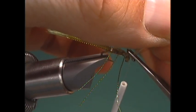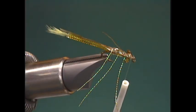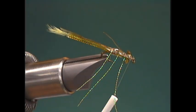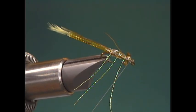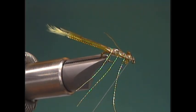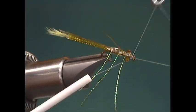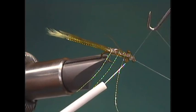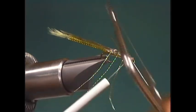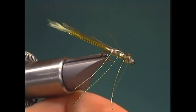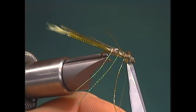Trim off the excess. Now I'm ready to grab my whip finisher and tie it off. Take a few turns of the thread here. Take off our thread.